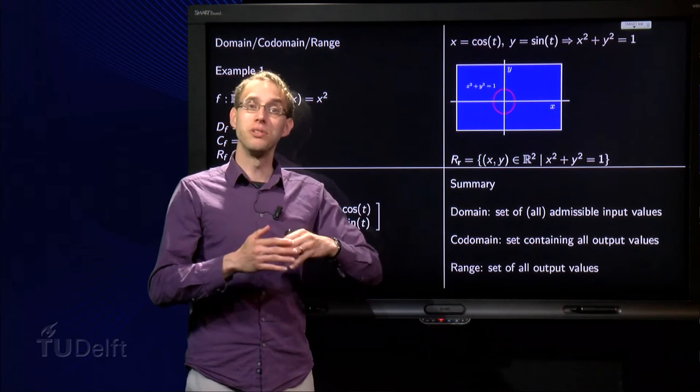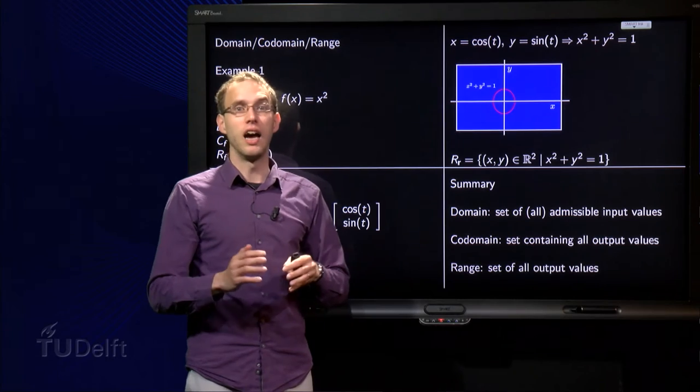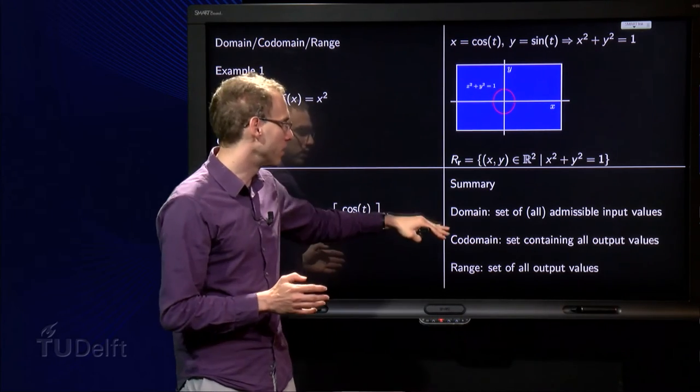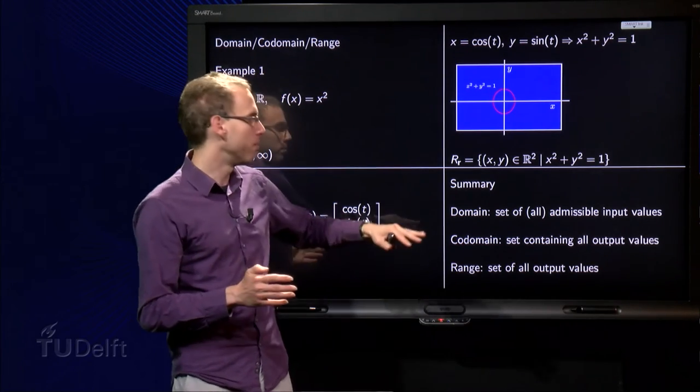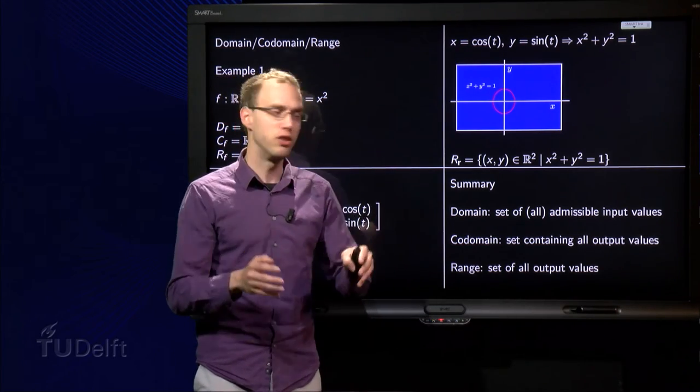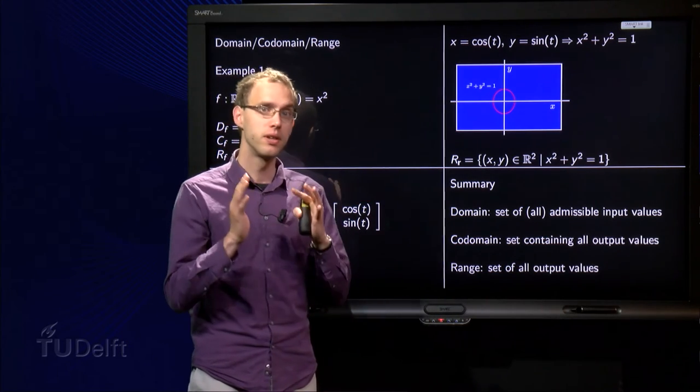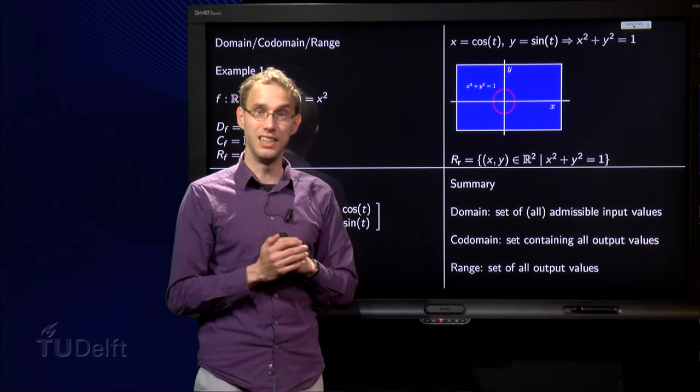Codomain is a set containing all output values, and usually you will choose something like R², R³, something easy. You can choose something more clever for the codomain, but it's usually chosen the easy one, like over here we just took R² as our codomain. So that one is usually easy to determine.